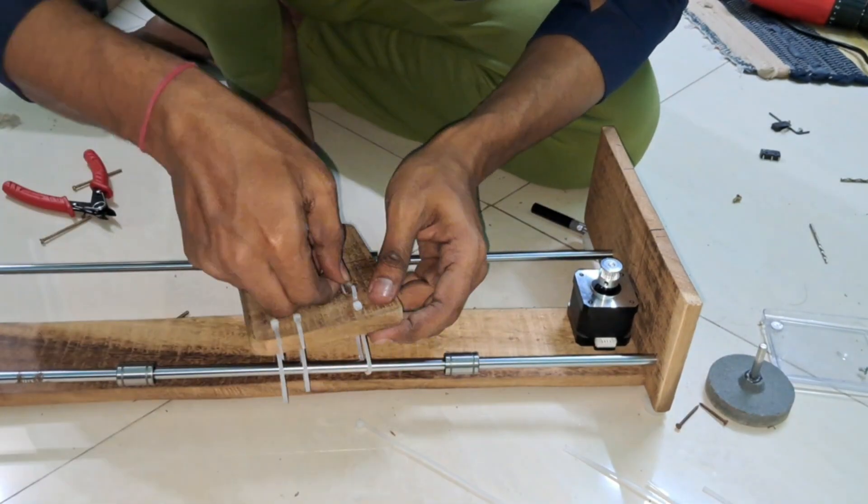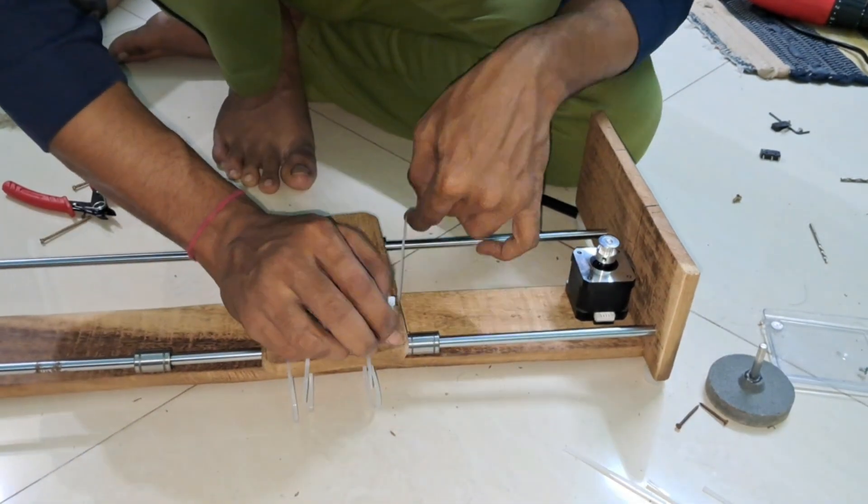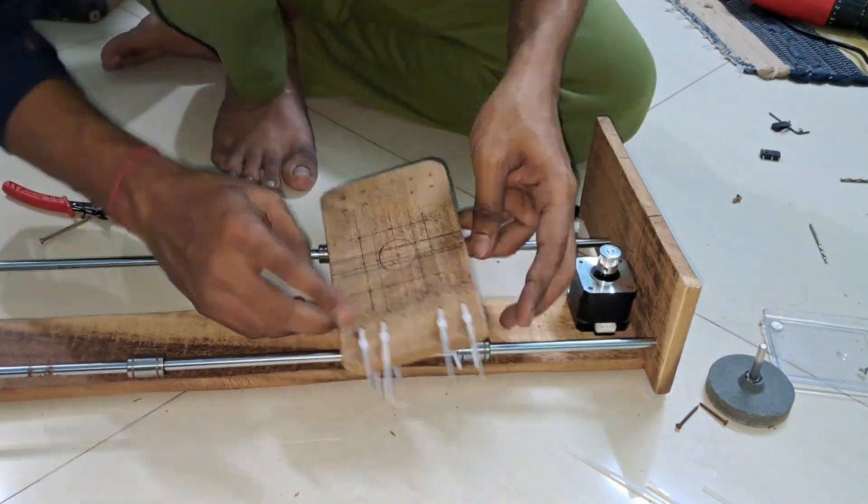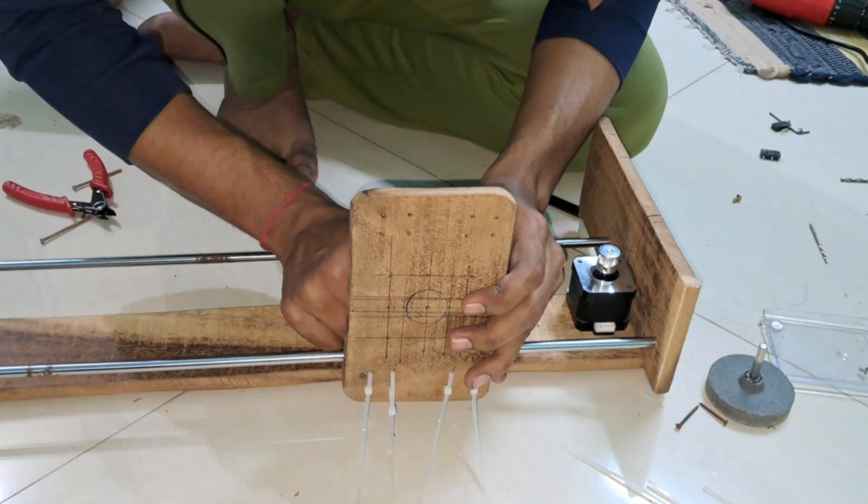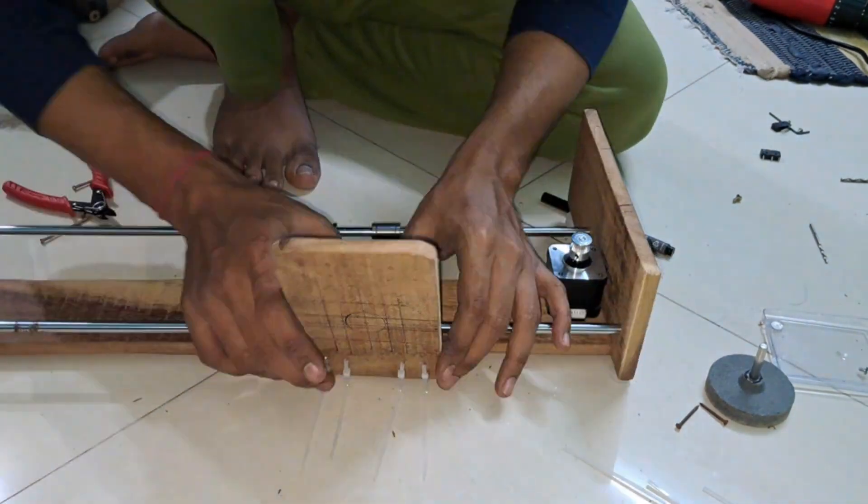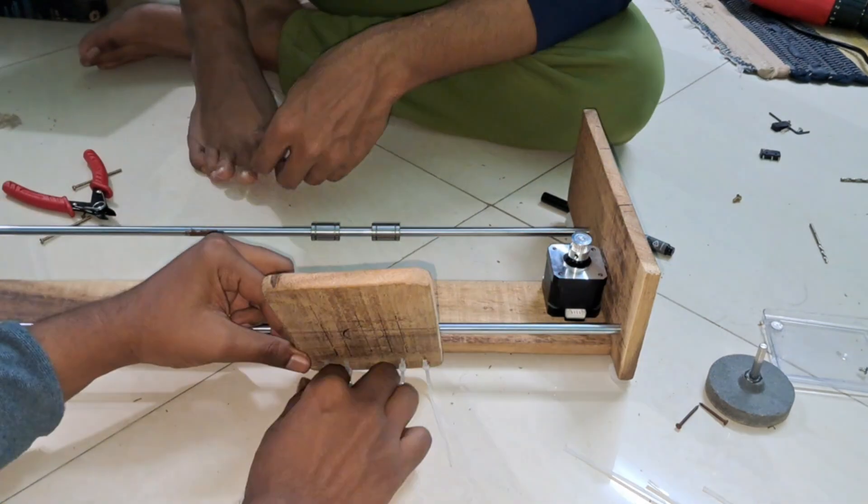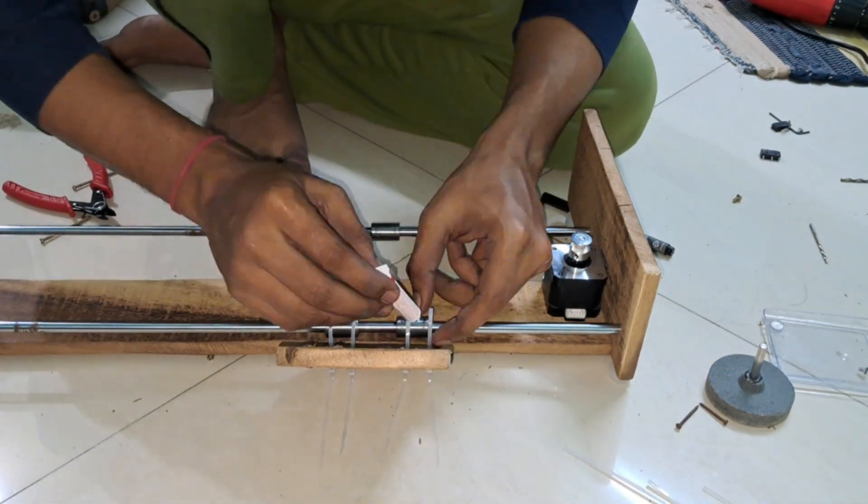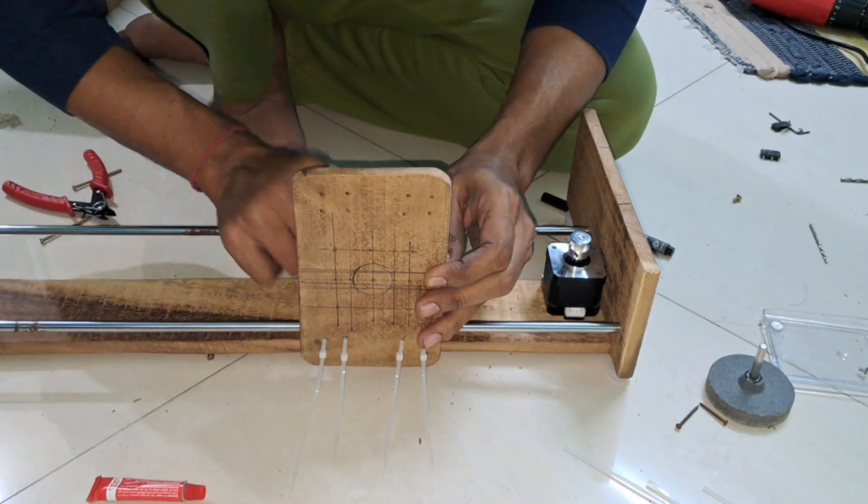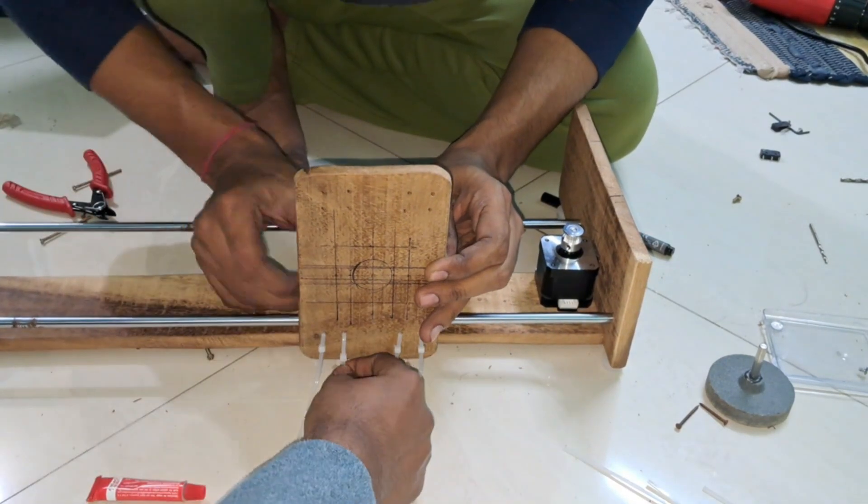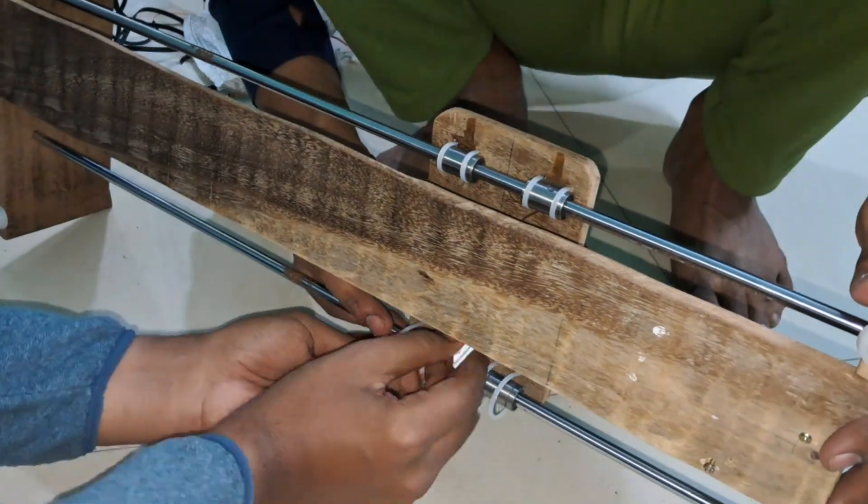Now that the frame is ready, it's time to install the motion system. The smooth steel rods fit into these holes and we'll attach the LM20UU linear bearings that will allow smooth movement across the frame. You can use bond-tight gum or wood glue to securely attach the wooden part with the bearings to the frame. This will help keep everything firmly in place and ensure smooth movement.